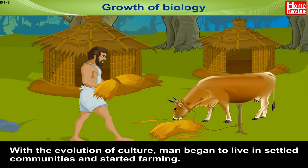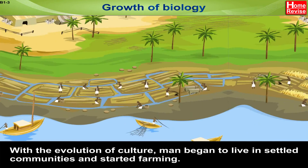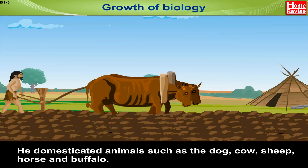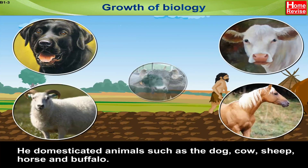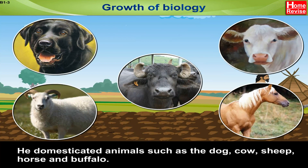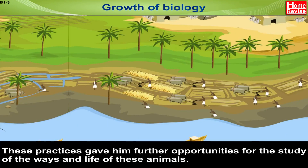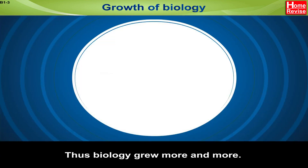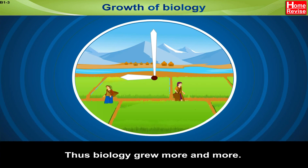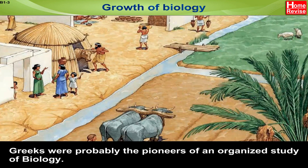With the evolution of culture, man began to live in settled communities and started farming. He domesticated animals such as the dog, cow, sheep, horse, and buffalo. These practices gave him further opportunities for the study of the ways and life of these animals. Thus, Biology grew more and more. Greeks were probably the pioneers of an organized study of biology.